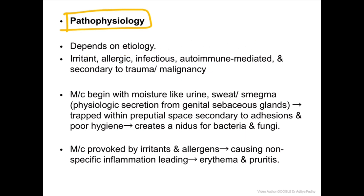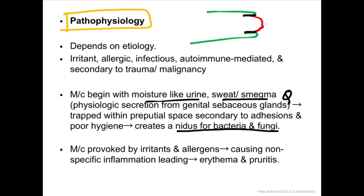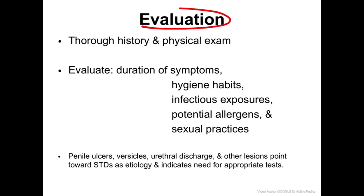Pathophysiology: moisture like urine, sweat, and smegma - which is secretion from the sebaceous gland - gets trapped between the prepuce and glans. Due to adhesion or poor hygiene, or if phimosis is present, this creates a nidus for bacteria and fungi. Other irritants and allergens are also provoked, causing balanoposthritis.